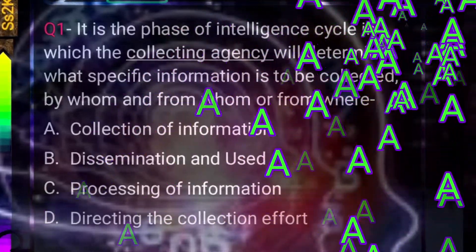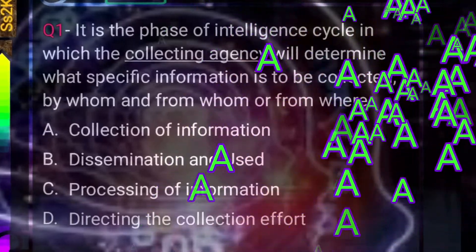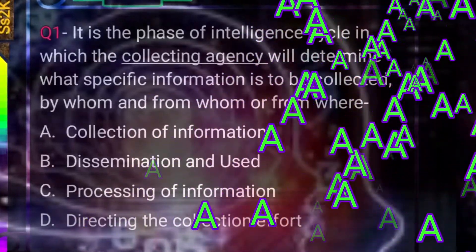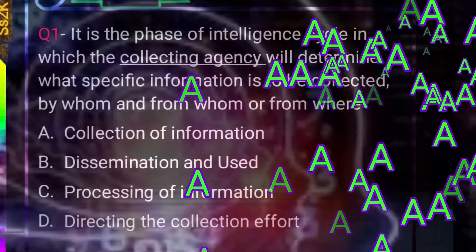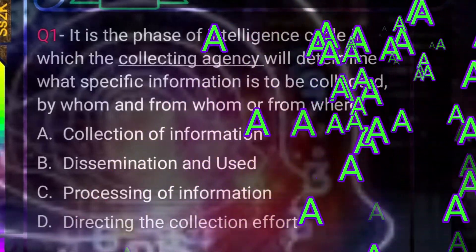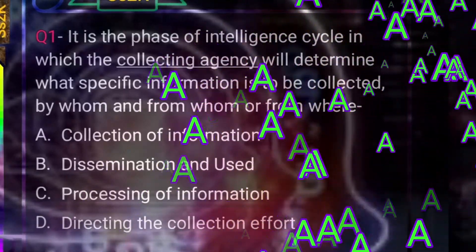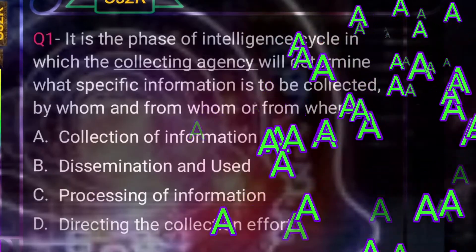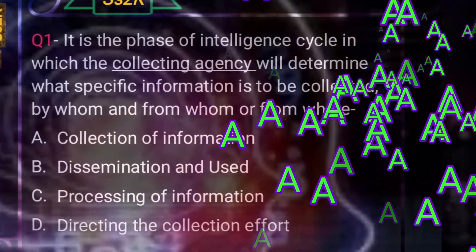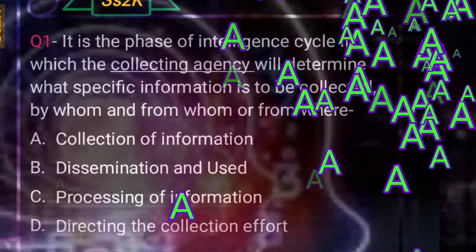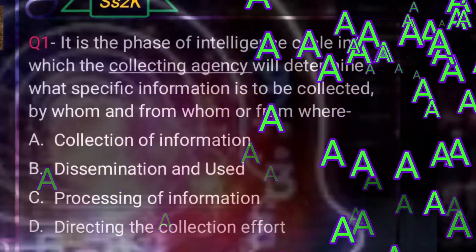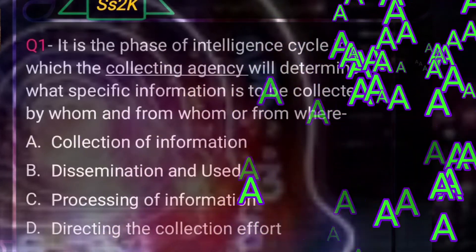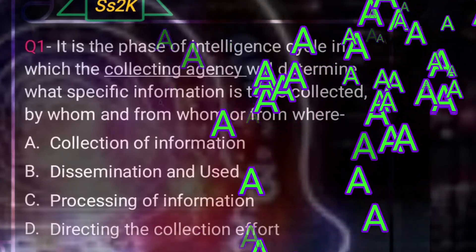Another definition of collection of information: it also refers to the systematic exploitation or utilization of the sources of information by collection agencies and the delivery of the information obtained to the proper intelligence unit or agency. A collection agency refers to any person, unit, or activity that collects and/or processes information by research, surveillance, or exploitation of sources. There is also what is called a collection plan — a dynamic tool used to coordinate and integrate the efforts of all collection units and agencies.